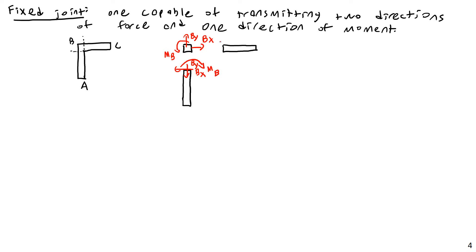Where would these forces appear on these members? We simply have to be consistent with Newton's third law - equal and opposite. So BY would be applied downward like this, BX would be applied like this, and MB like so. Again, equal and opposite. And then similar here.